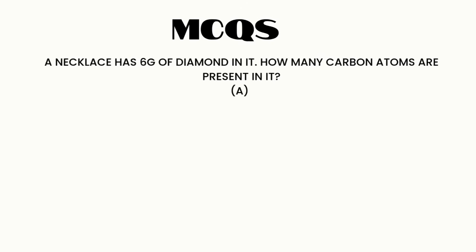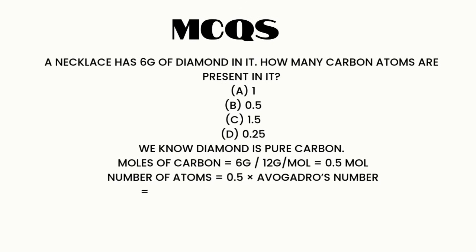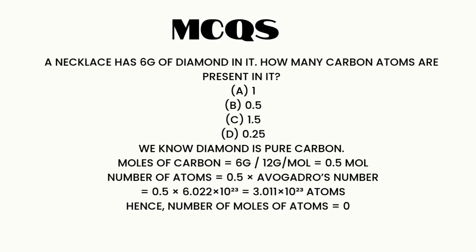Question 3. A necklace has 6G of diamond in it. How many carbon atoms are present in it? Options: A. 1. B. 0.5. C. 1.5. D. 0.25. We know diamond is pure carbon. Moles of carbon equals 6G divided by 12 grams per mole equals 0.5 moles. Number of atoms equals 0.5 times Avogadro's number equals 0.5 times 6.022 times 10 to the 23 equals 3.011 times 10 to the 23 atoms.